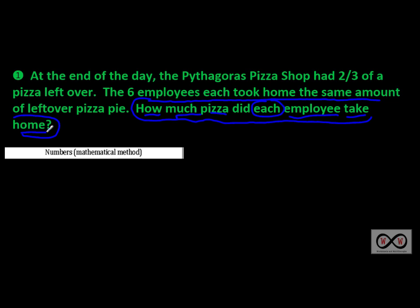We'll go back to the first sentence and tease out any math clues. At the end of the day the Pythagoras Pizza Shop had two-thirds — that's a definite math clue. They had two-thirds of a pizza leftover. Next sentence: the six employees each took home the same amount of leftover pizza pie. Six employees is another math clue, and they each took home the same amount.